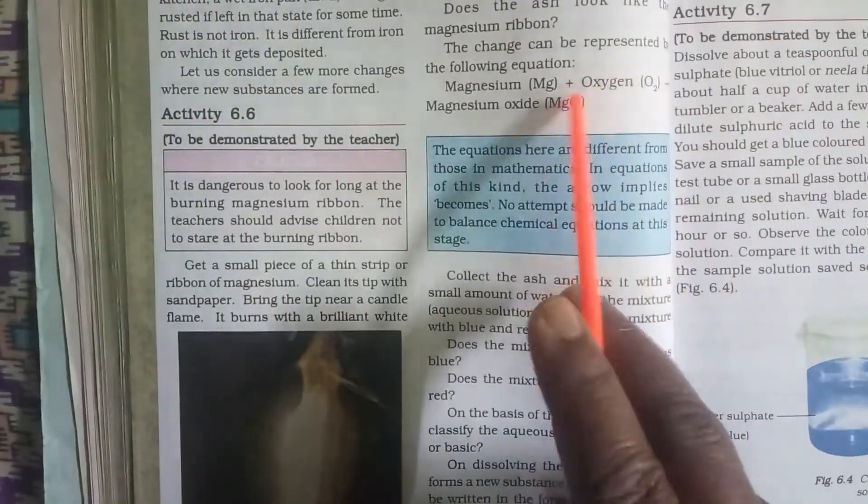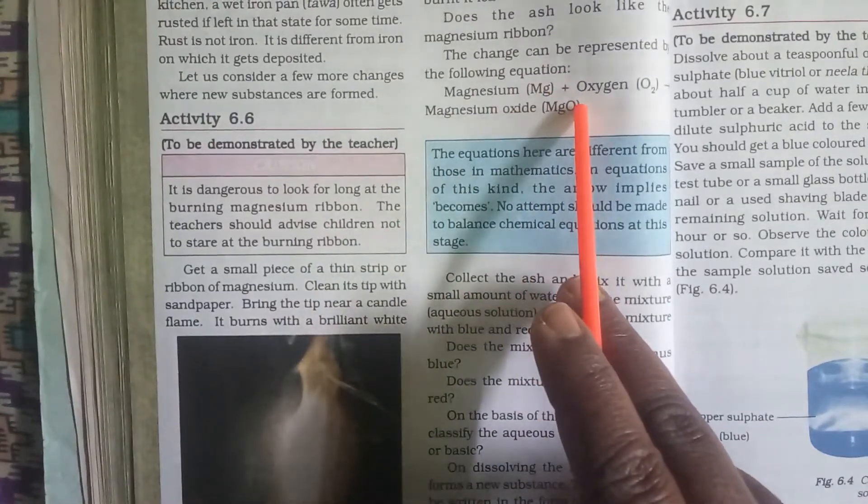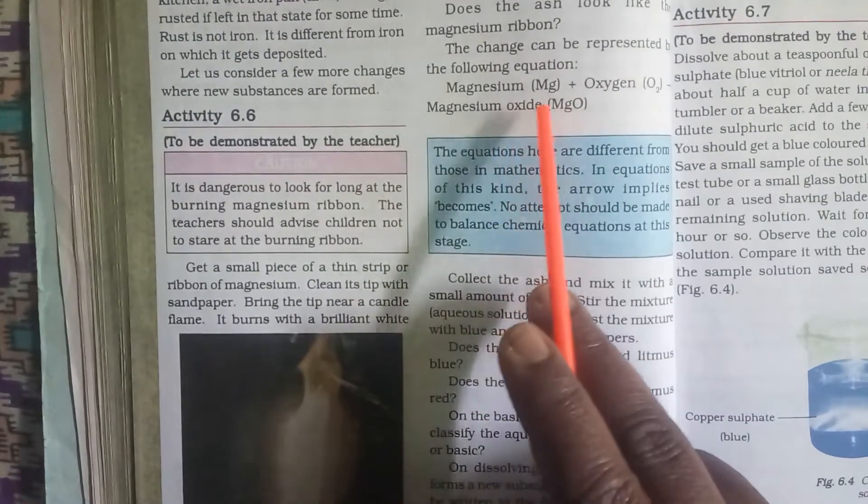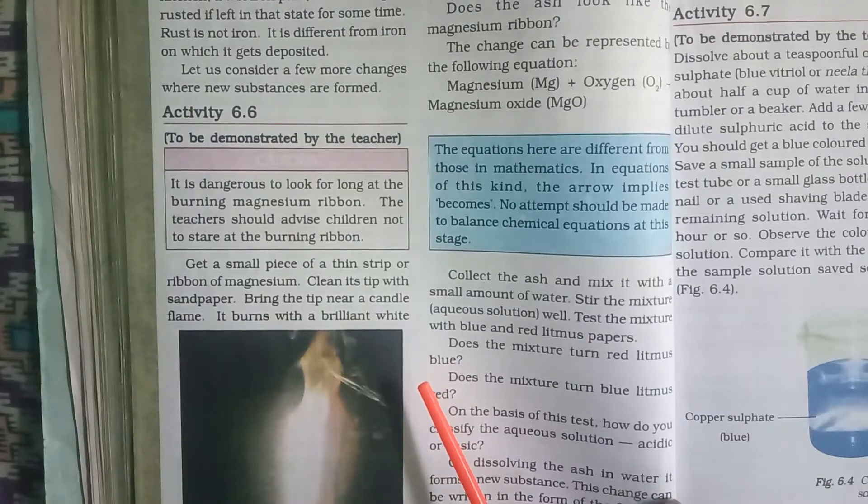Here children you can see the equation also: magnesium, that is Mg, along with oxygen, that means it reacts with oxygen and gives rise to magnesium oxide. So one new product has been formed.